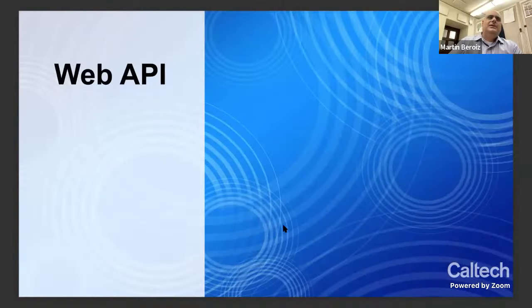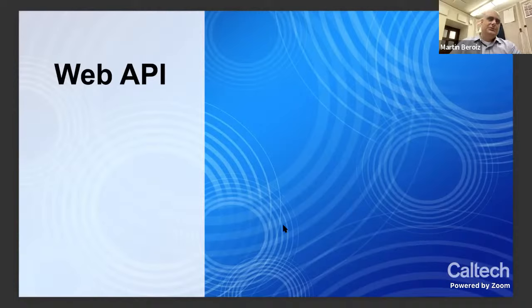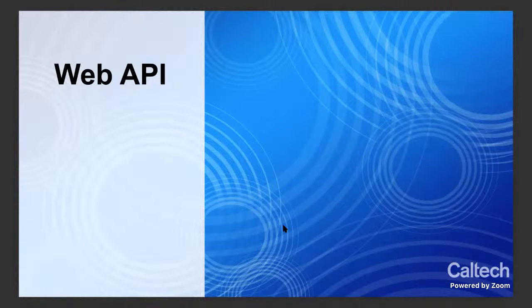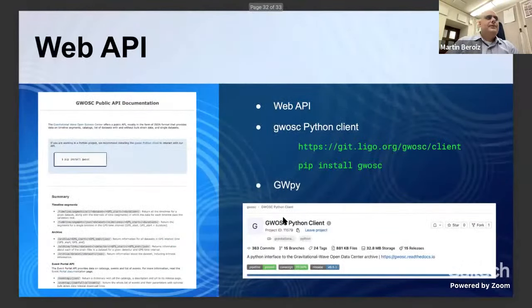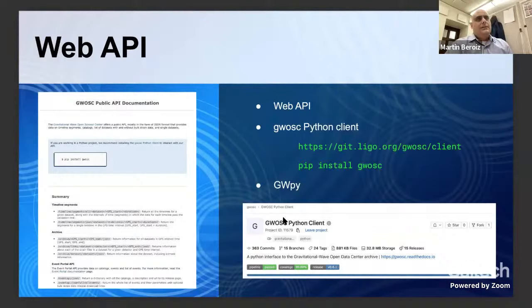Lastly, I would like to talk about the web API. Everything discussed so far has focused on the HTML interface of the website. But if you're doing more programmatic things, you may want to interact with the website through the API. You can find the API documentation in the software section. All the data products I mentioned — event catalogs, segments, and more — are accessible in JSON format through a long list of URL endpoints.